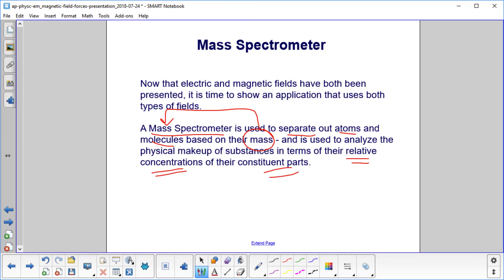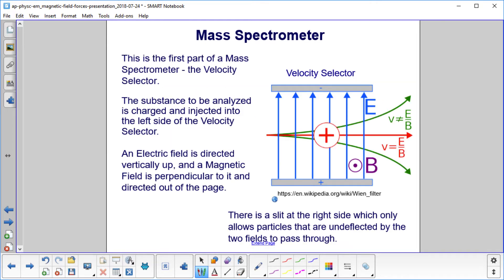The first part of a mass spectrometer is the velocity selector. The substance to be analyzed is charged and injected into the left side of the velocity selector. We have an electric field directed vertically up and a magnetic field that is perpendicular to it and directed out of the page. There's a slit on the right side, something like this.